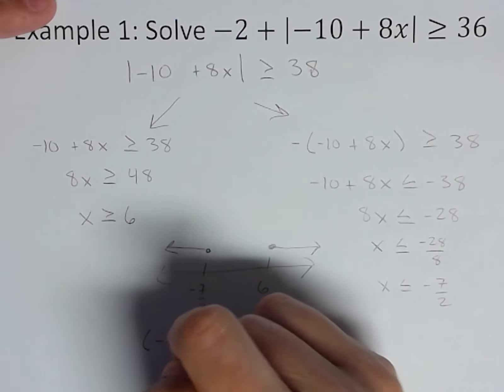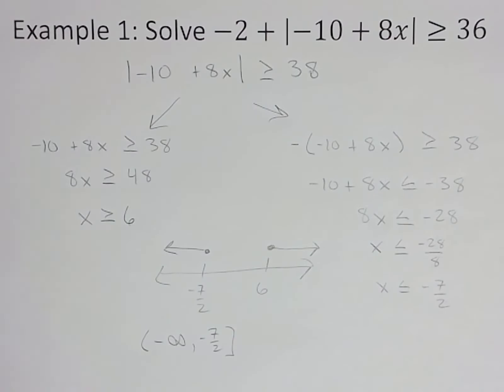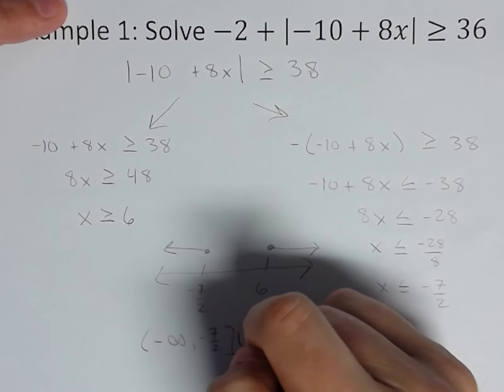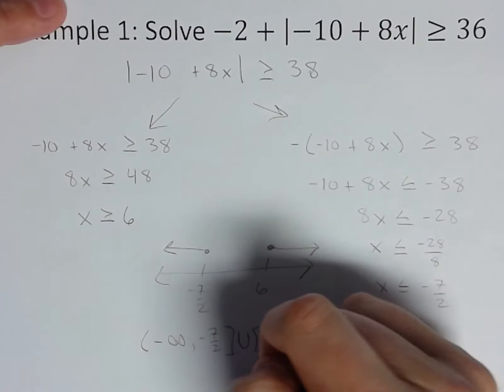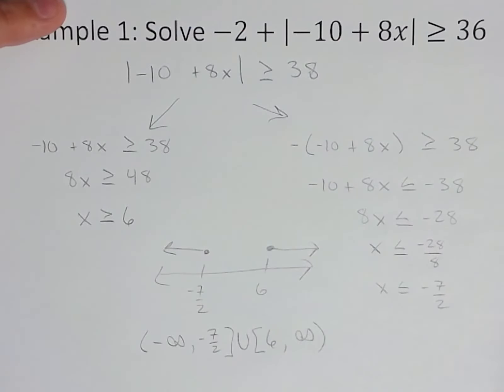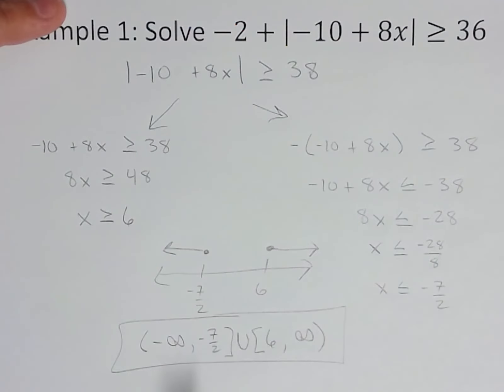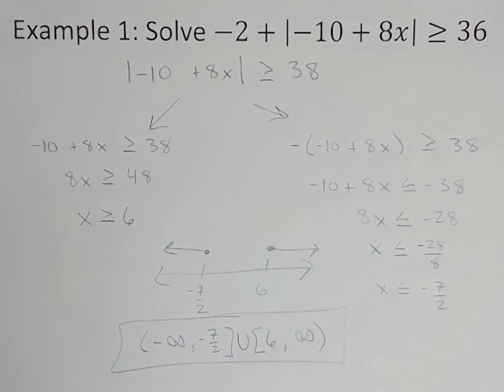Let's formalize it: negative infinity to negative 7 halves, union 6 to infinity. This, by the way, I start the year and keep having interval notation show up on our concept checks so that when we run into these problems you feel really comfortable writing it. It's one thing to solve it correctly, but then we want to put the answer in interval notation as well. So there is our example. Very similar: isolate absolute value, write your two equations, solve it, write your solution set using interval notation.